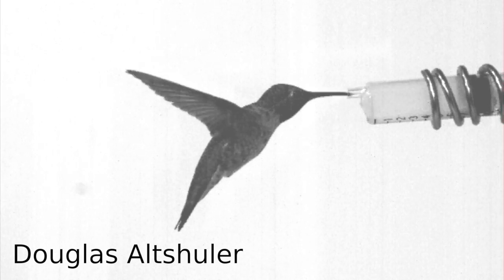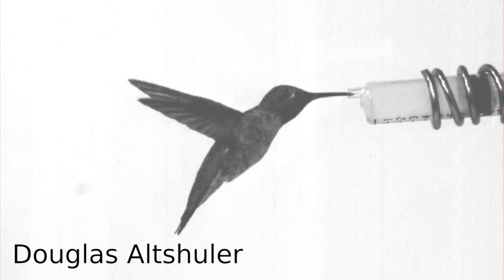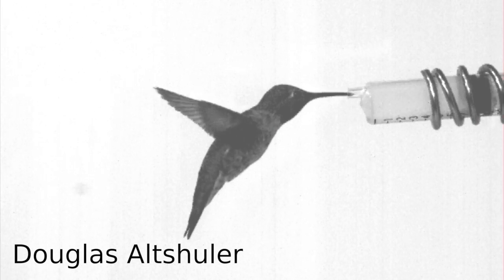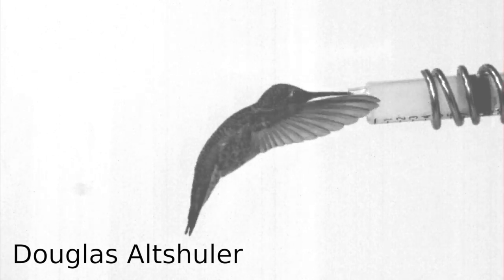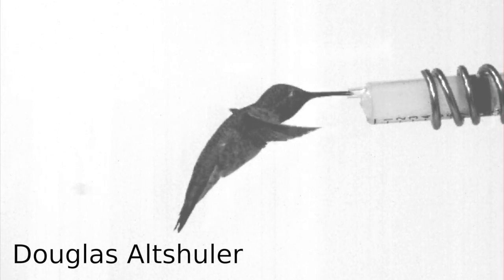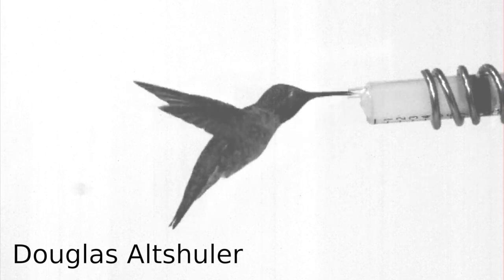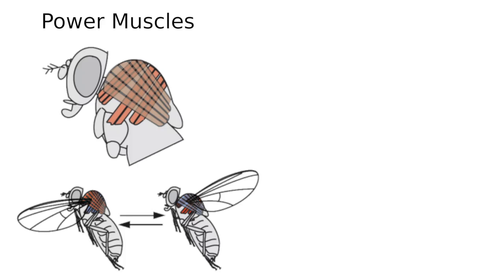Flies use a surprisingly small set of brain cells called neurons to control the motion of their wings. In birds, bats, as well as many other flying insects, the muscles that do the work of powering the wing are also responsible for steering. In flies, however, these two jobs are delegated to two different groups.